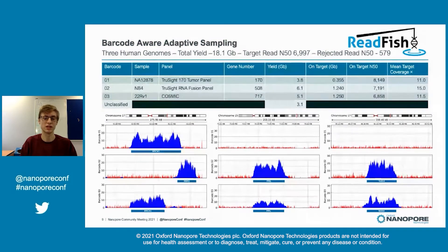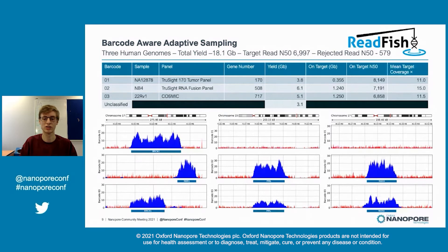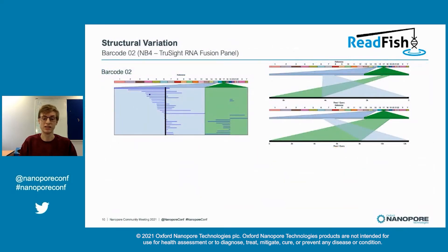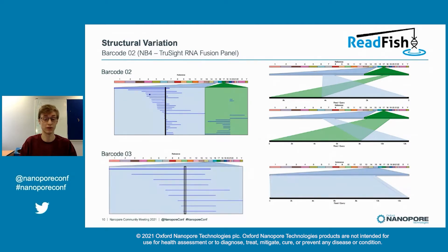Looking at coverage over some of the targets — BRCA1 and NBR1 on the left, PML in the middle, and RARA on the right — the boxes underneath show the target regions, and the colors show blue for sequenced and red for rejected data. We're getting good enrichment over our target regions and good specificity on each barcode. Using this data, we can identify the known structural variant between PML on chromosome 15 and RARA on chromosome 17, with two reads confirming this fusion event. Since both genes are in the Cosmic panel on barcode 3, we looked for the same variant there, but do not find it.